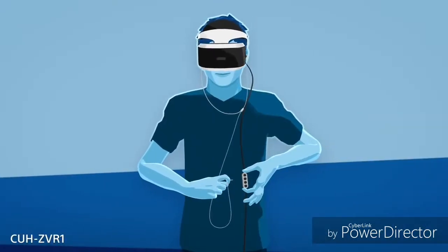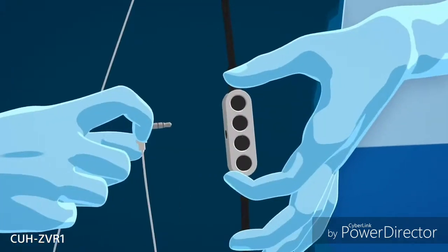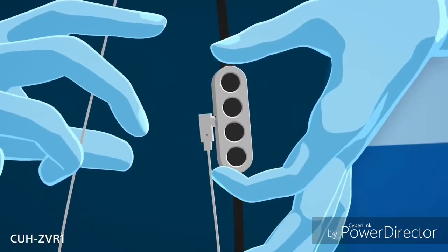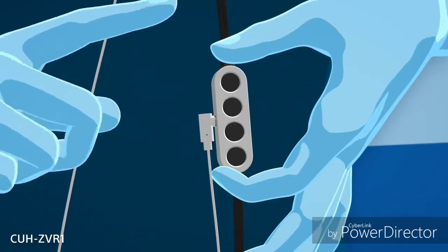If you have the CUH ZVR 1, the stereo headphones plug into the jack on the inline remote. There, you will also find the volume, mute, and power buttons.